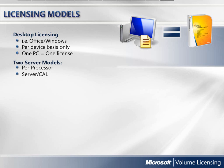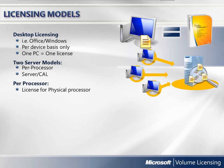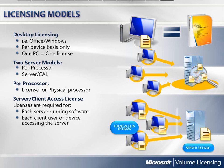On the server side, there are two primary models: per processor and server client access license, or CAL. The per processor model requires that each physical processor in the server with the software installed must have a per processor license, allowing access by an unlimited number of client devices or users. For the server CAL model, every installed usage incident of Microsoft Server software requires a related server license. In addition, all devices or users that connect to the server need a client access license, or CAL, which provides the rights to connect to that server.